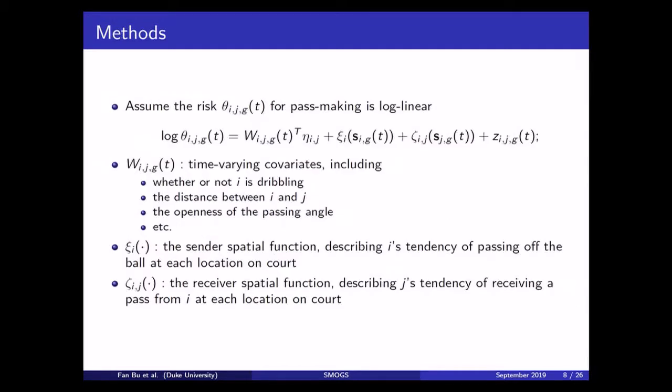We assume that this risk function is log linear with respect to a bunch of different factors. First of all, the time varying covariates. Those covariates include whether or not the ball carrier i is dribbling the ball at the moment, the distance between the ball carrier i and the potential receiver, the teammate j, the openness of the passing angle from the ball carrier to the teammate, and so on.